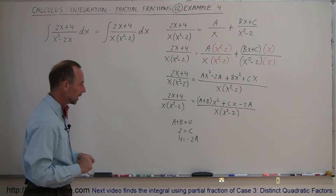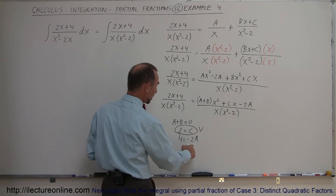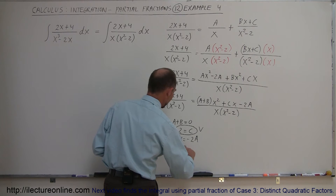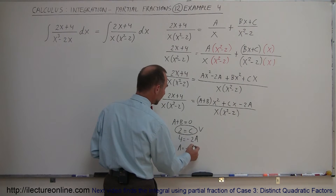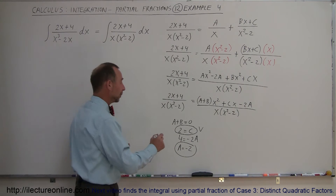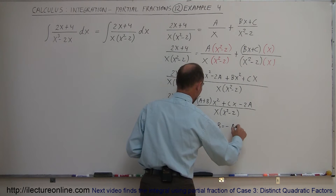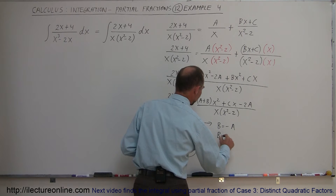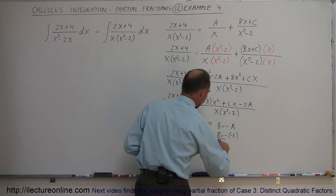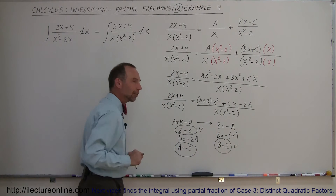From c equals 2, that constant is determined. From 4 equals negative 2a, dividing both sides by negative 2 gives a equals negative 2. Then since a plus b equals 0, b equals negative a, and since a is negative 2, b equals 2. So we have c equals 2, b equals 2, and a equals negative 2.